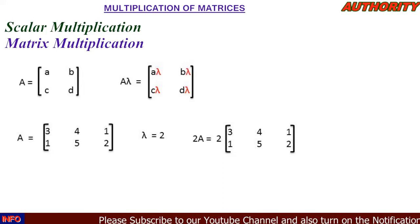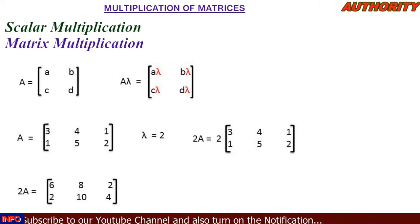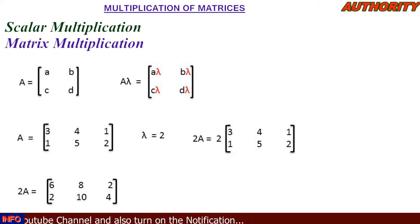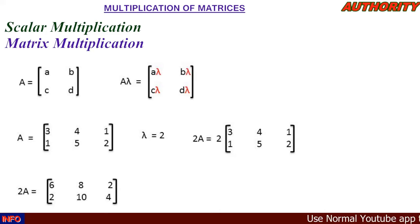When you say 2 times A, this 2 multiplies every element. So 2×3=6, 2×4=8, 2×1=2 for the first row. Then for the second row: 2×1=2, 2×5=10, 2×2=4. Therefore, 2 multiplied by matrix A equals [6, 8, 2; 2, 10, 4].